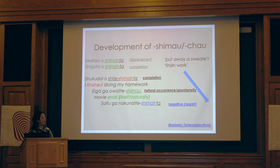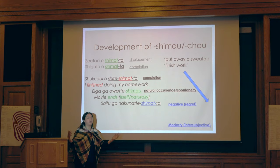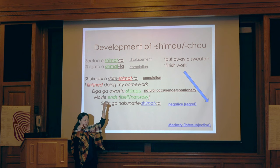I'm talking about the span of the past 300 years or so. Shimau grammaticalized first in the 17th century. And then 'saifu ga nakunatte shimatta' came to take on more subjective meaning over time.